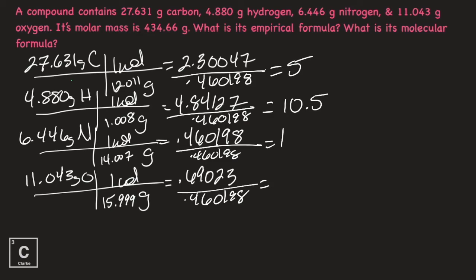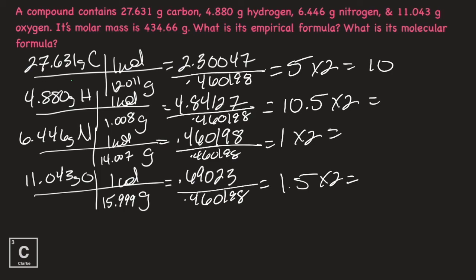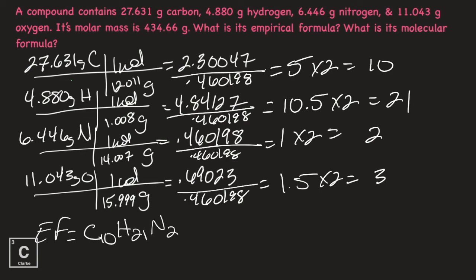Let's do this last one. I'm getting another 0.5: 1.4999, so 1.5. We dealt with a 0.5 earlier — that's like 50 cents, and it takes two 50-cent pieces to make a dollar. So when we multiply till whole, we multiply by two. What we do to one, we've got to do to all: 5 times 2 is 10, 10.5 times 2 is 21, 1 times 2 is 2, and 1.5 times 2 is 3. So our empirical formula is C₁₀H₂₁N₂O₃.